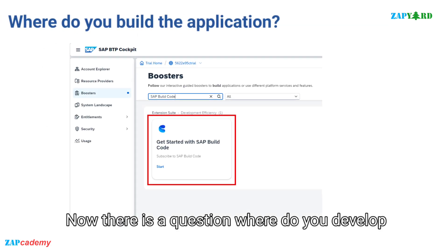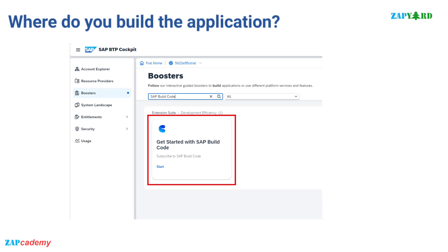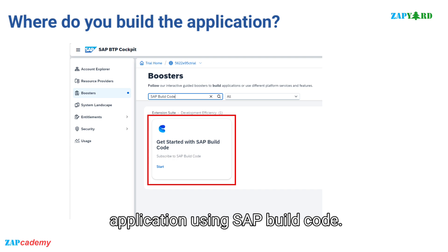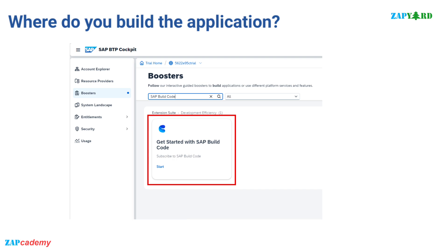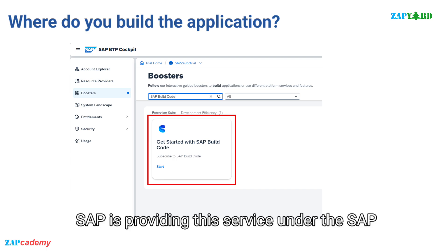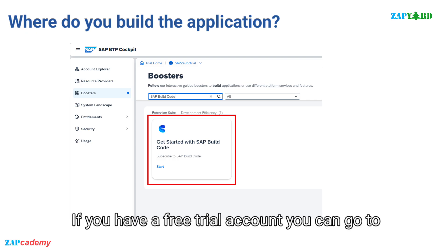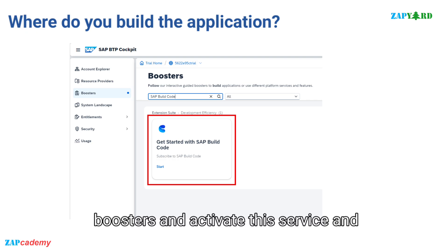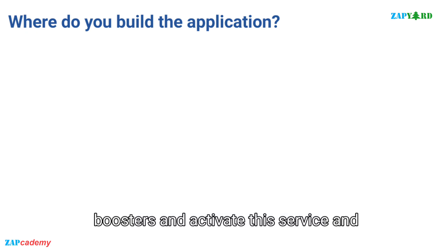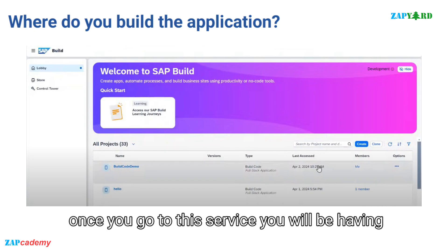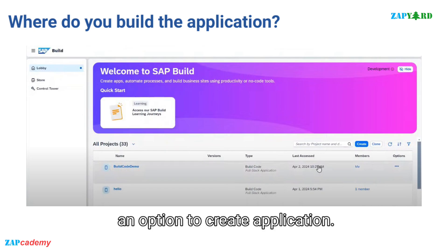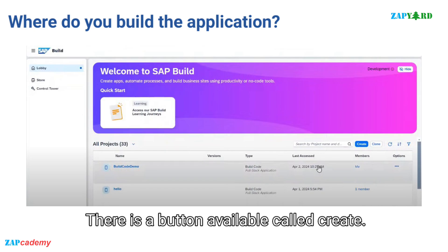Now the question is: where do you develop applications using SAP Build Code? SAP is providing this service under the SAP free trial account in BTP. If you have a free trial account, you can go to boosters and activate this service. Once you go to this service, you will have an option to create an application — there is a button available called Create.